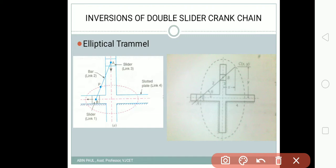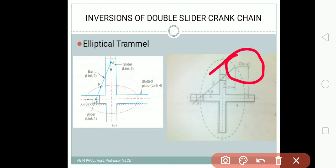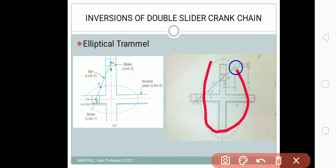A particular point on the connecting rod — point P — will always trace an elliptical path. At any instant we can see the location of point P given by coordinates (x, y). It traces an elliptical path, which is why it is called the elliptical trammel. That is the purpose of the elliptical trammel, the first important inversion of double slider crank chain.